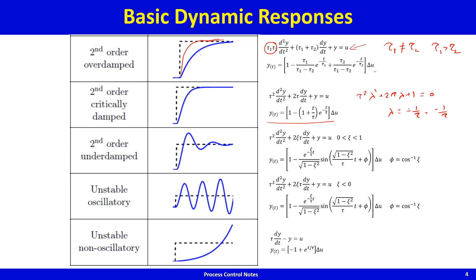Then we have the second-order under-damped case, where the damping coefficient is between 0 and 1. The response is an exponential decaying element combined with a sinusoidal element, and the sinusoidal element comes from the imaginary part of the roots of the characteristic equation. The response is fast but has some oscillations. If the damping coefficient goes less than 0, those oscillations become unstable.